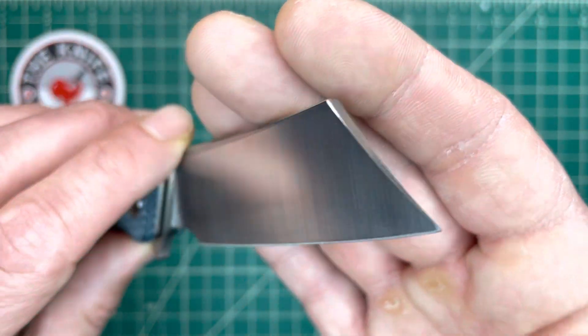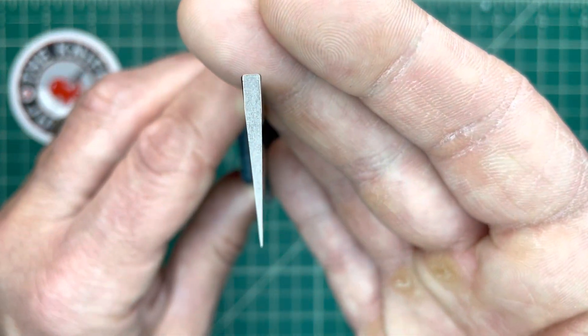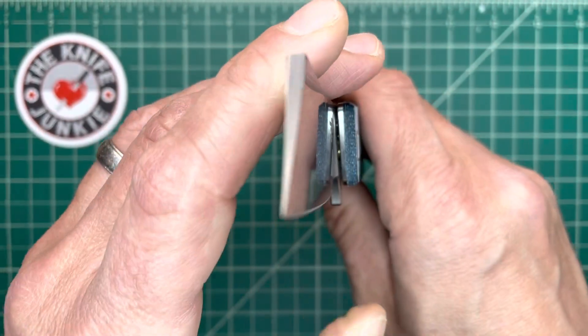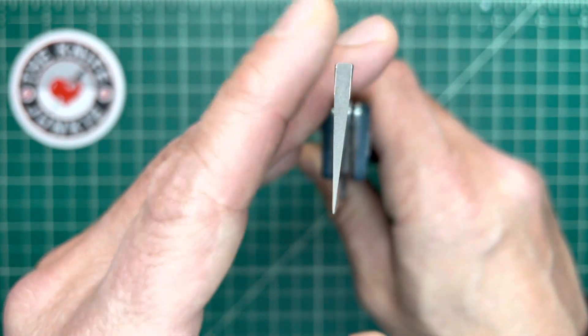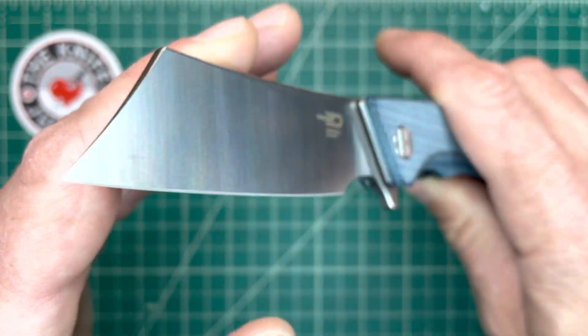That tip is very functional. It's going to be great for cutting and for draw cutting and utility pull cutting. And you do have quite a bit of meat behind that tip because this is a flat ground blade.